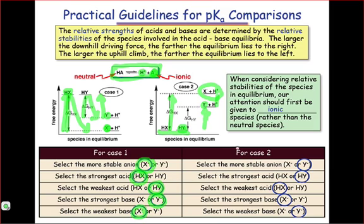As a result, we would expect Hy to be the strongest acid. Y- is the more stable anion, and that's working in our favor in this case, because it's a smaller uphill climb to go from Hy to Y-, than it is to go from Hx to X-.